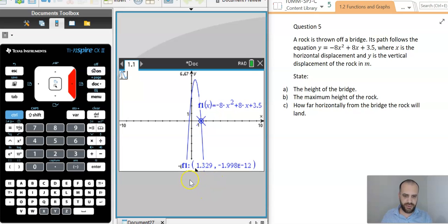And the last one, there we go, 1.329. This number here, negative 1.998 times 10 to the negative 12, that's 0, right? That's as close to 0 as you could possibly get. So, our intercept is 1.329 approximately.